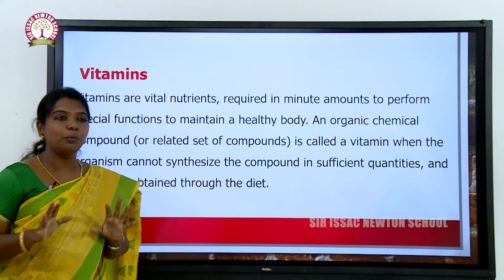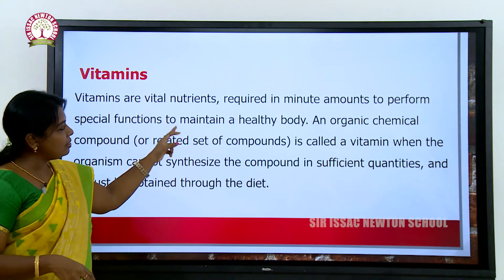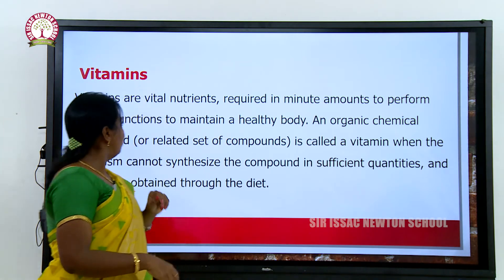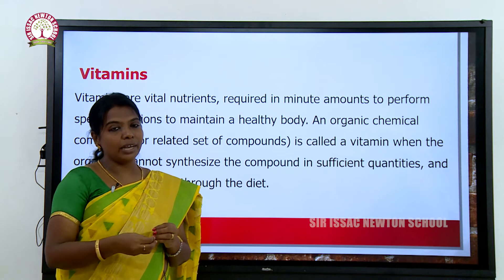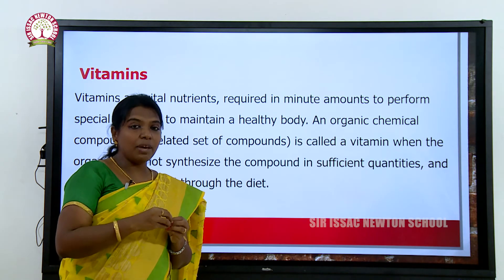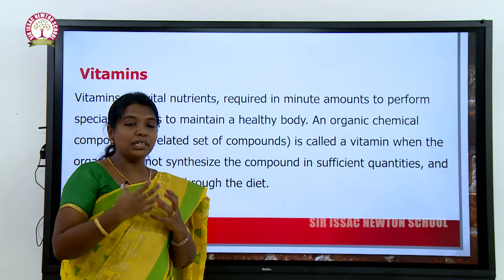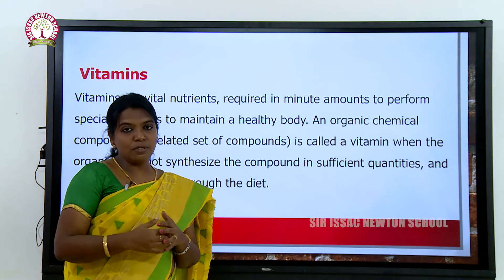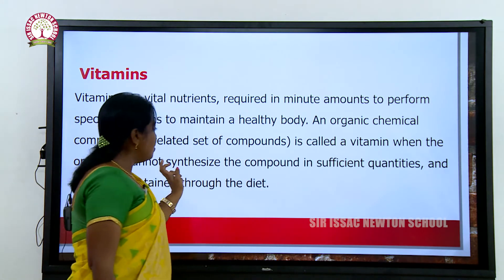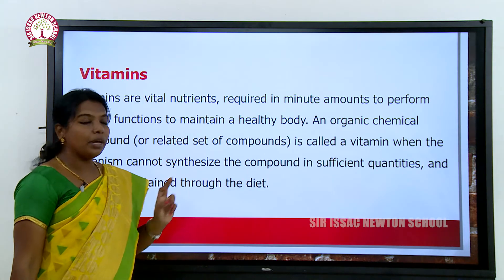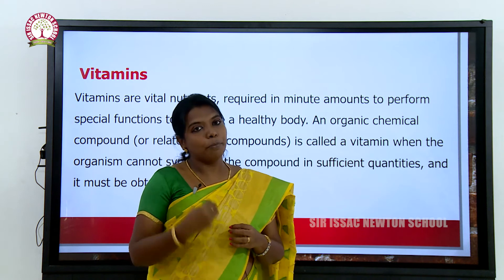Vitamins are the vital nutrients required by the body. We cannot survive without vitamins because they are very important for our growth, and without sufficient vitamins we can develop many diseases due to vitamin deficiency. An organic chemical compound is called a vitamin when the organism cannot synthesize it in sufficient quantities and it must be obtained through the diet.